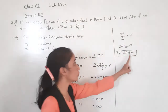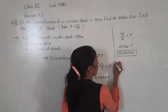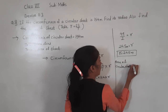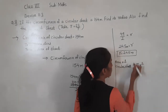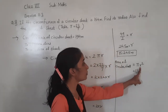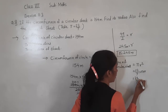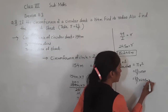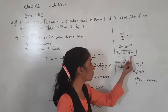Now we have to find the area of the circular sheet. Area of circular sheet — what is the formula? Area = πR². The value of π is 22/7, and R = 24.5 metres. So Area = (22/7) × 24.5 × 24.5.